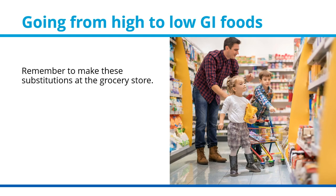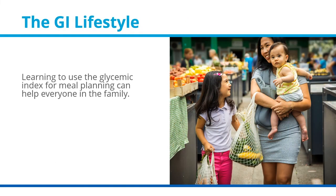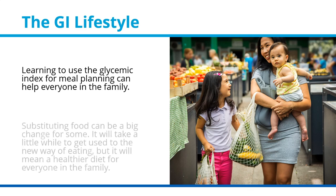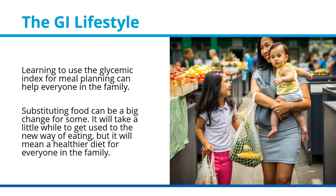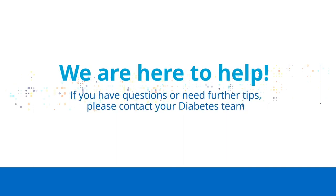Remember to make these substitutions at the grocery store — keeping high GI foods out of the cart is half the battle. Learning to use the glycemic index for meal planning can help everyone in the family. Substituting foods can be a big change for some; it will take a little while to get used to the new way of eating, but it will mean a healthier diet for everyone. If you have questions or need further tips, please contact your diabetes team.